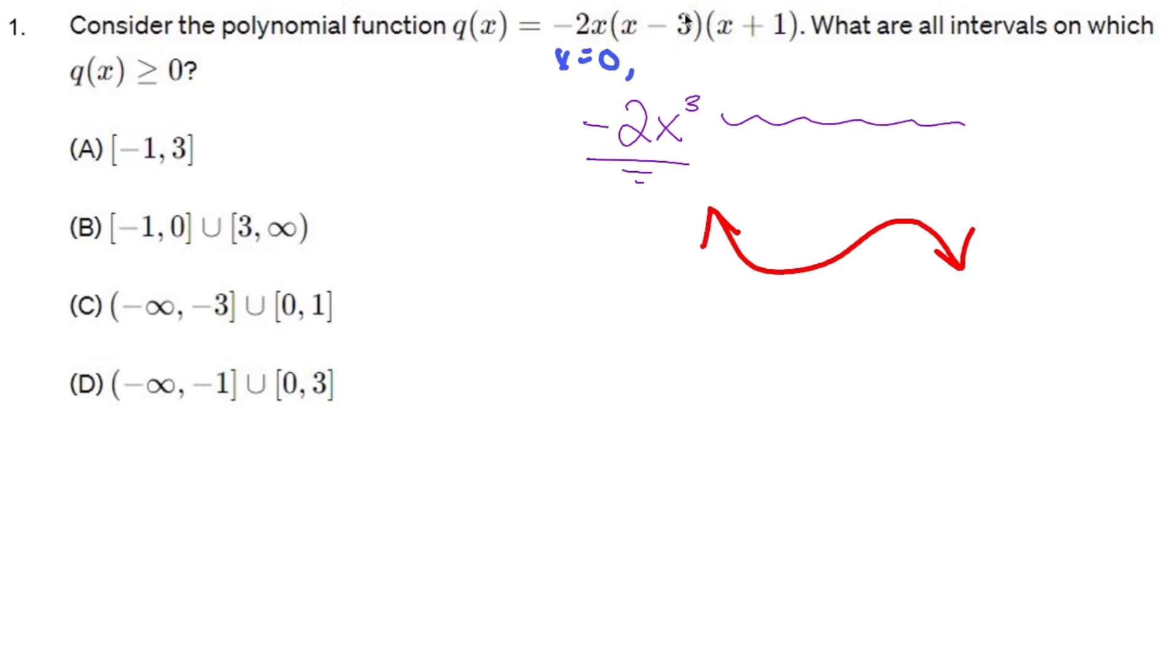If I imagine that this is equal to zero, I'd add three and get x = 3 for this one. And if I imagine that this is equal to zero and add or subtract one from both sides, I'd get x = -1. So my zeros are 0, 3, and -1, not in that order.